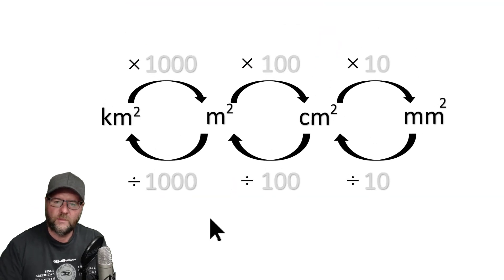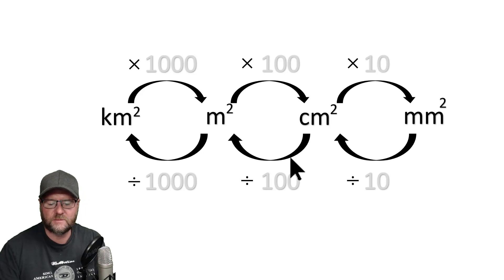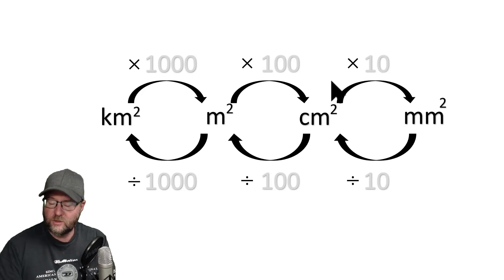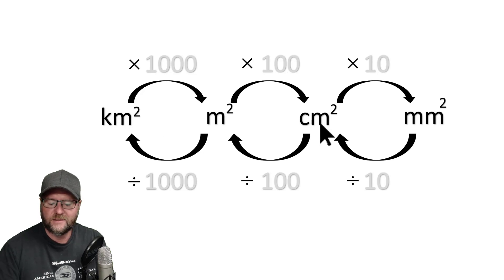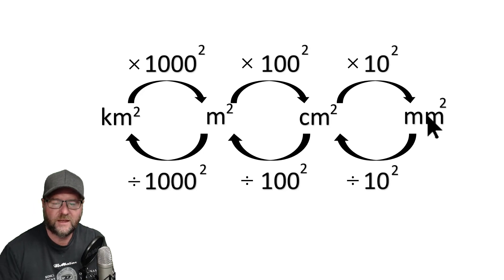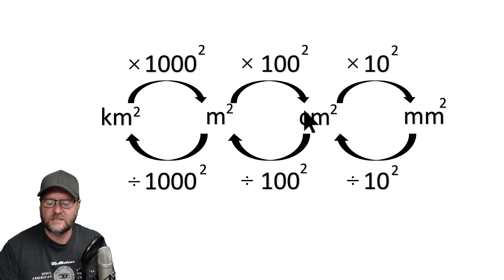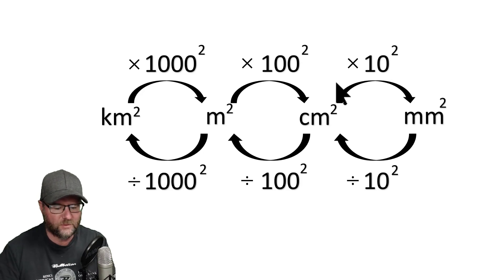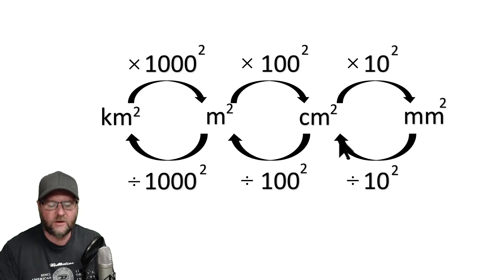What about if you were asked to convert areas? In other words, maybe square meters to square centimeters. I've grayed out these values, but I do need to keep them. If I'm squaring the units, because now we're representing area, I just square the numbers. Now I've got a conversion chart for area. I could convert square centimeters to square millimeters, or square millimeters to square kilometers — all kinds of conversions by following the arrows.